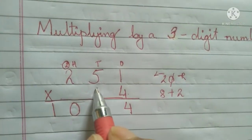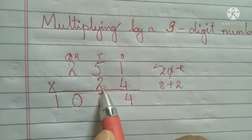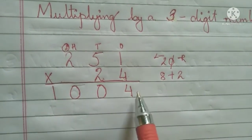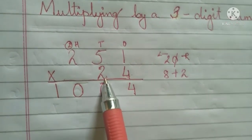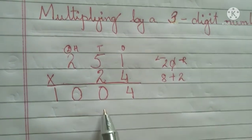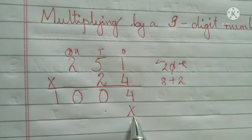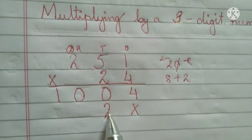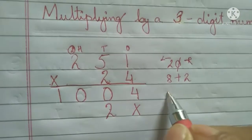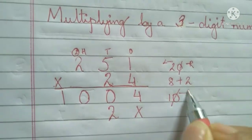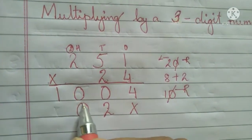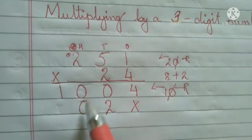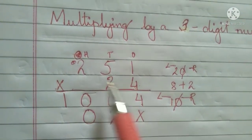Now let's try with a two-digit number — I just added a two here, nothing else changes. You already finished multiplying with four. Now let's do it with two; two is in the tens place, so we start from the tens place, not the ones place. Ones place we just cross out — you don't need to write anything there. Two ones are two, two fives are ten; zero goes on the right side here, one carries to the top.